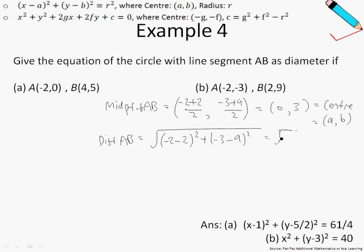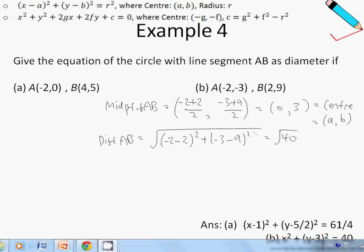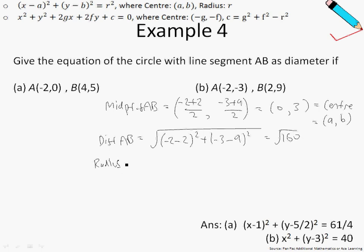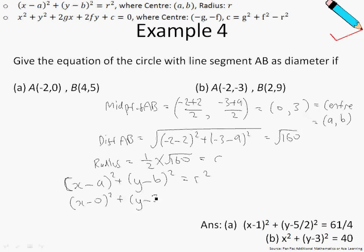Next, let's find distance AB — working this out, I should get the square root of 160. Recall that the radius is half of this distance, which is half times root of 160, and this is my radius R. Substituting into the formula x minus A squared plus y minus B squared equals R squared: since A is 0, x minus 0 squared; B is 3; and R is this value. Simplifying, I get x squared plus y minus 3 squared equals 40.